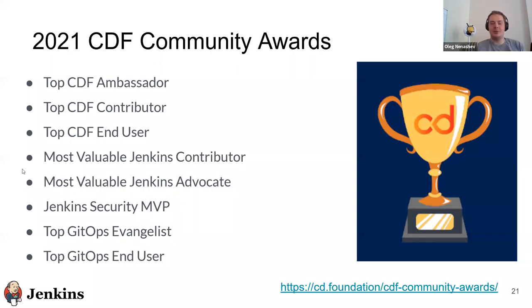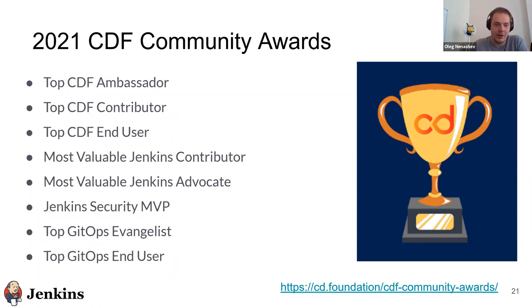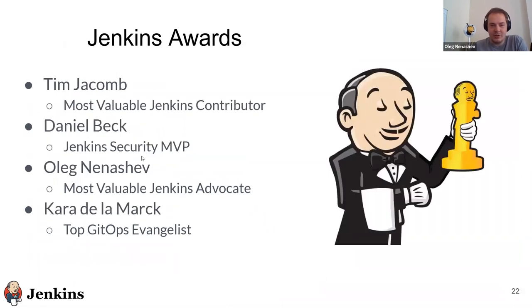Thanks to everyone who supports the project. Last update before we switch to more interesting parts: the Continuous Delivery Foundation community awards. If you participated in the ceremony yesterday, there were multiple awards — actually eight awards plus project awards, so maybe 14 in total — focused on different contributors. There were multiple Jenkins awards because Jenkins is a dedicated project, so we were able to have three awards this year: most valuable Jenkins contributor, most valuable Jenkins, and security MVP. We would like to congratulate the winners. Tim Jacob, second year in a row, is the most valuable Jenkins contributor. It's well deserved — thanks for your contributions to various areas including infrastructure, user experience, and configuration as code.